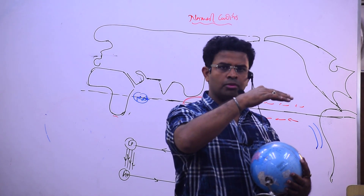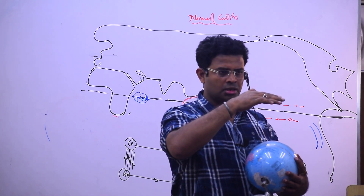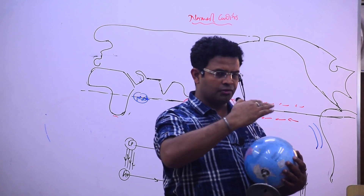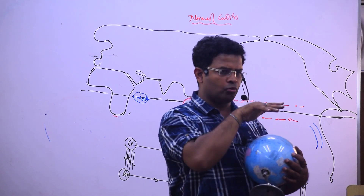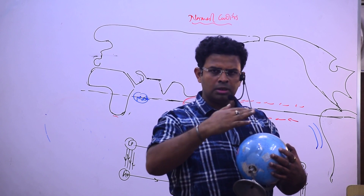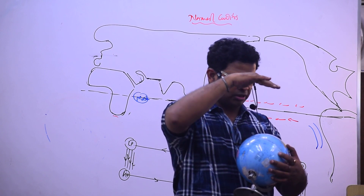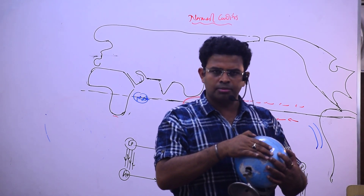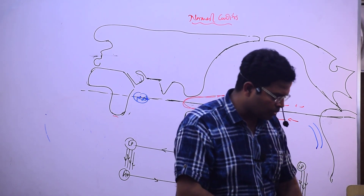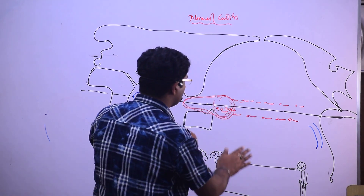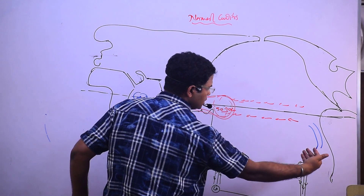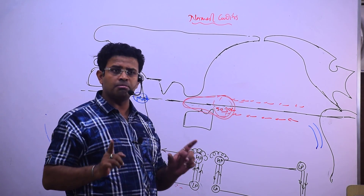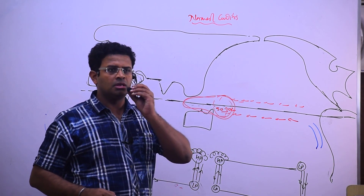When more air is rising from the equatorial region, it will descend more and move more towards the North Pole and South Pole. When it moves more towards the North Pole, it descends more at the subtropical high pressure belt. When the subtropical high pressure belt strengthens, the North East trade wind and South East trade wind become more effective in comparison to normal.